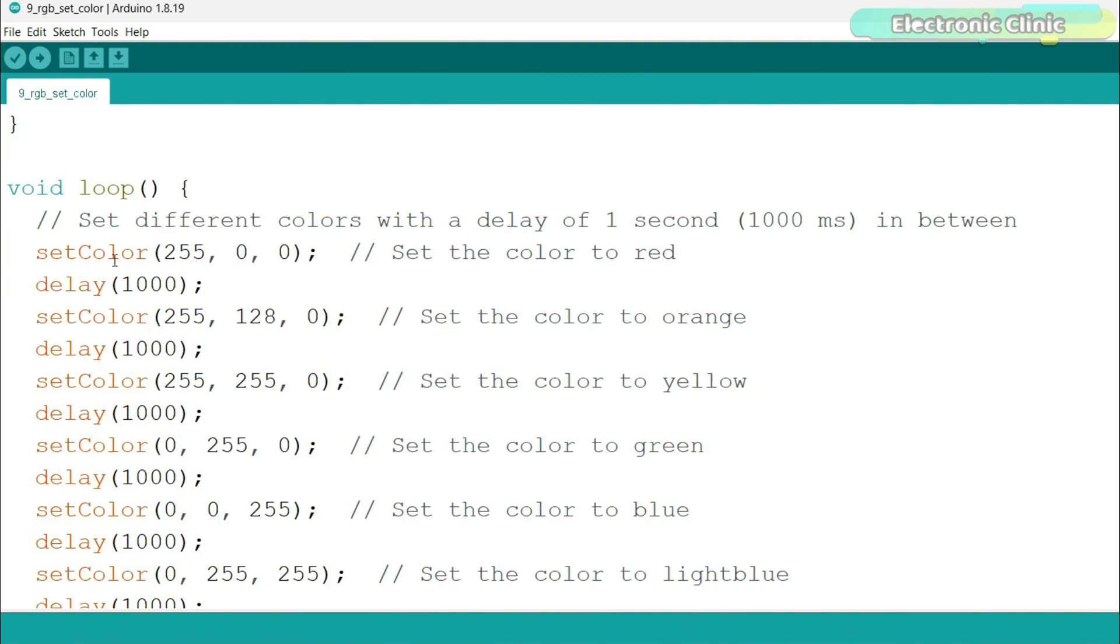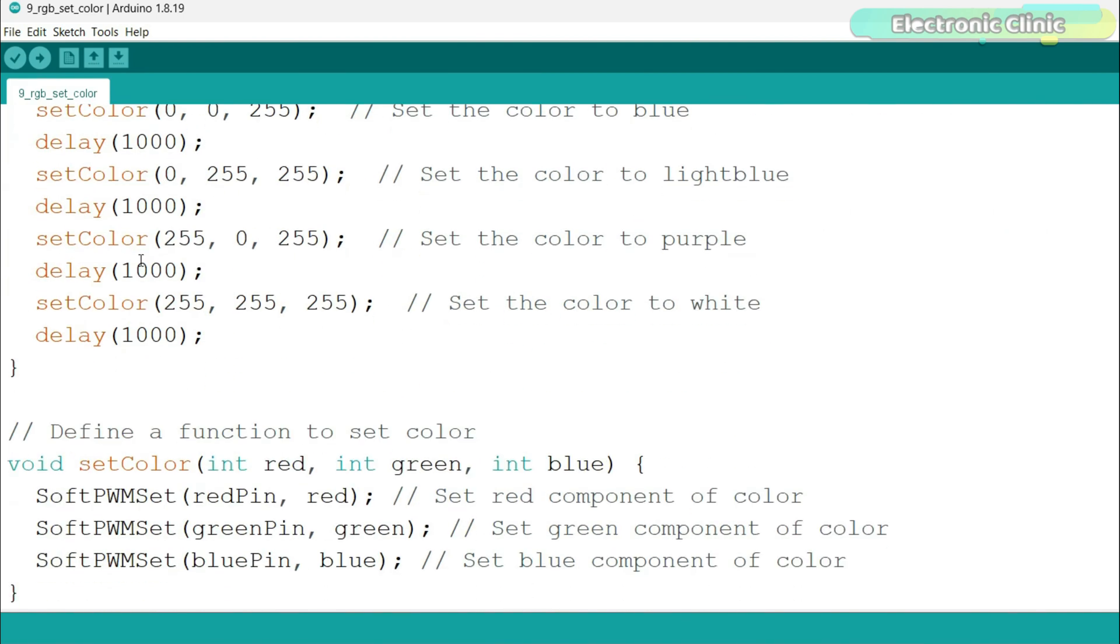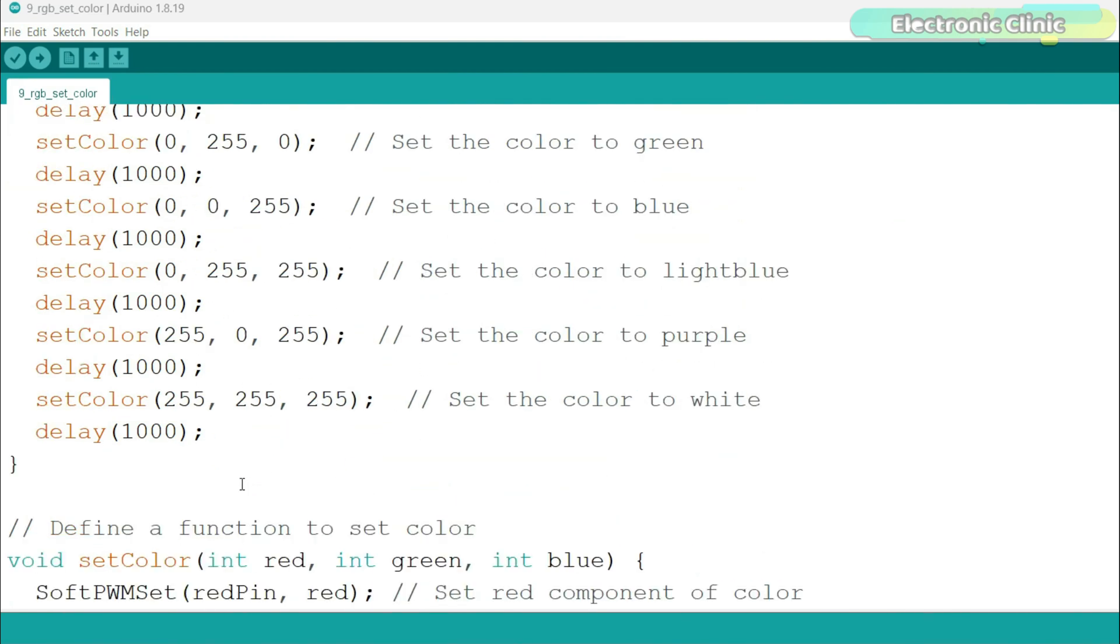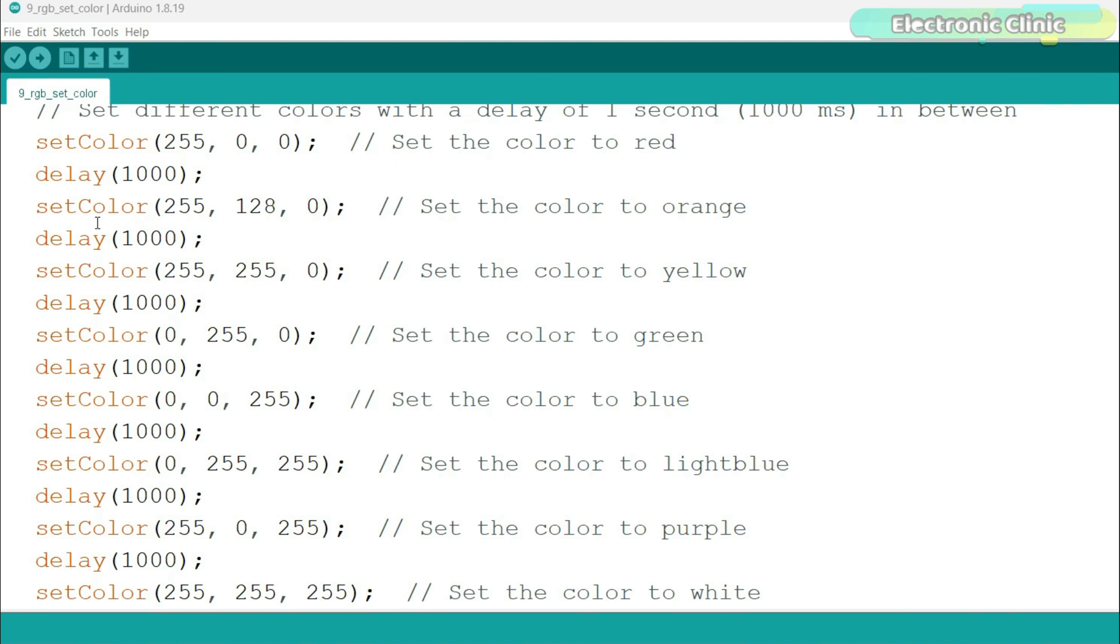This time, we are going to use the setColor function to generate any color of our choice. It's just a user defined function and it takes three inputs as the arguments. Its job is to mix these colors and it's done by changing the red, green and blue color values. Let's upload this program.